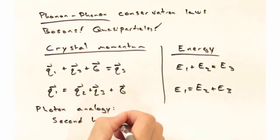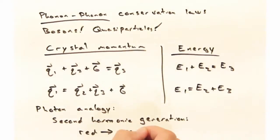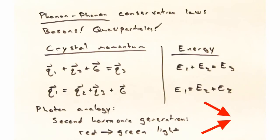If this whole business seems really creepy of phonons just becoming other phonons, we can think about the photon analogy, where we think about second harmonic generation. If I have two red photons and a material that's active for second harmonic generation, and I put those two photons into the crystal, there's a non-zero chance those two photons are going to combine and give me green light.